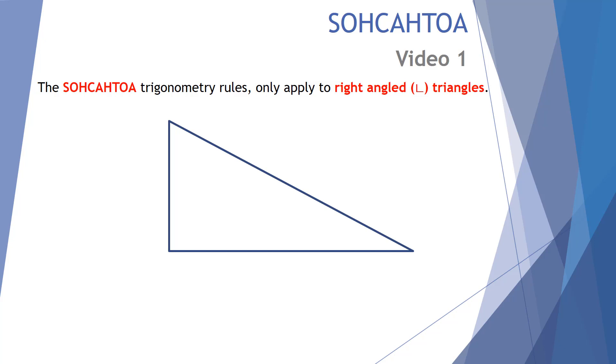SOHCAHTOA relates to right angle triangles. First, let's see what we mean by right angle triangle. A right angle triangle is a triangle that has one 90 degree angle within its three angles.